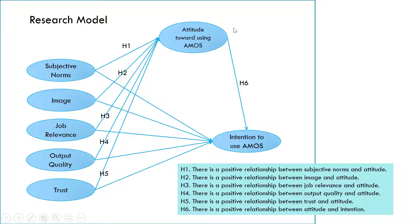This is the model that we actually want to test and we have some hypotheses here. The hypotheses are basically just the relationships between the constructs in your model. For example, H1 is there is a positive relationship between subjective norms and attitude. H2 is there is a positive relationship between image and attitude, and so on. H1 to H5 are about the relationship between the five independent variables and attitude, and H6 is the relationship between attitude and intention.